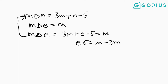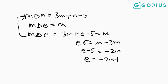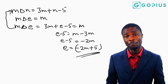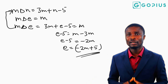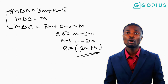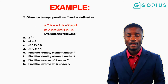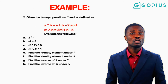Transferring minus 5 to the other side, we have e equals minus 2m plus 5. Unlike the previous case where a minus a gave zero, m is still present here, so the identity is written in terms of m. The identity element under the operation delta is minus 2m plus 5.